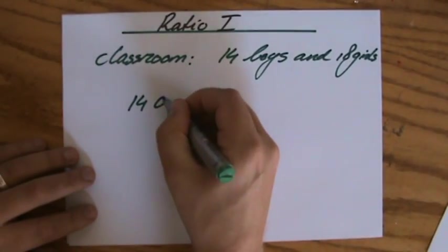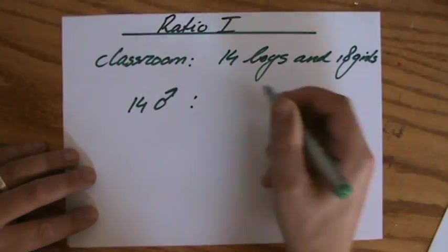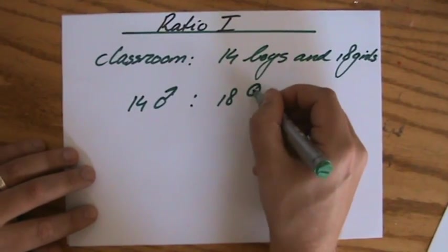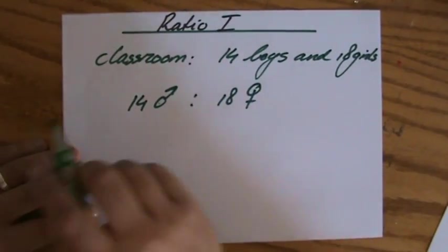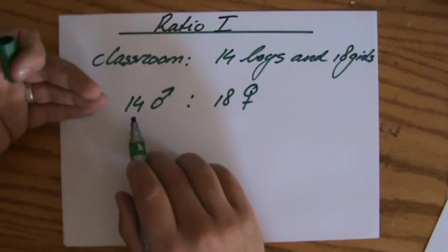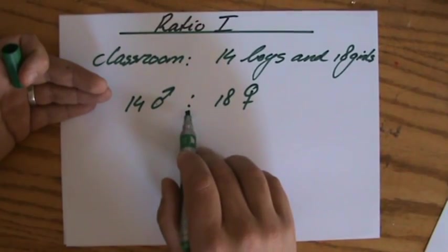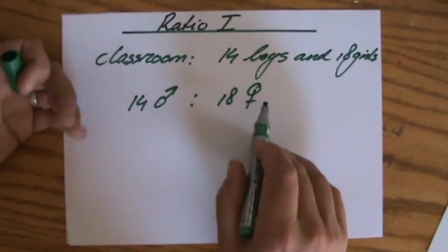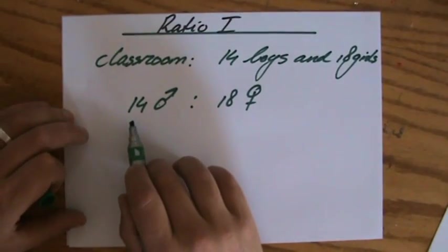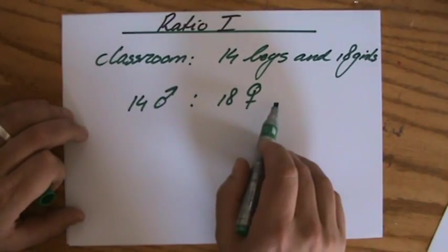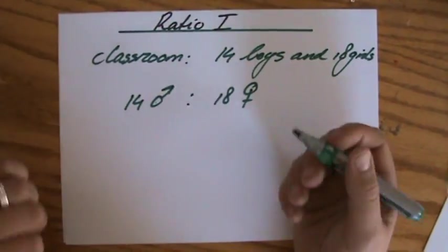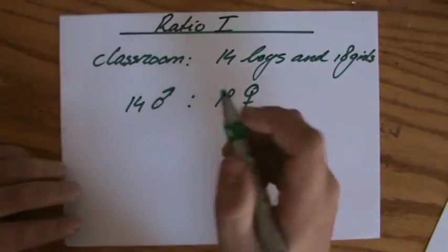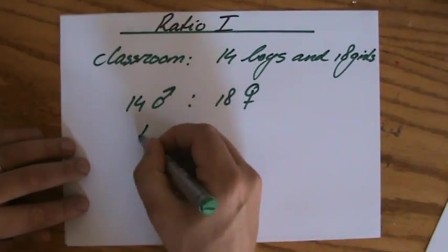I'm just using the sign for boys and girls, and the way you pronounce it is 14 boys as a ratio to 18 girls, or sometimes 14 boys to 18 girls. But ratio never has a unit, so we will get rid of the unit.